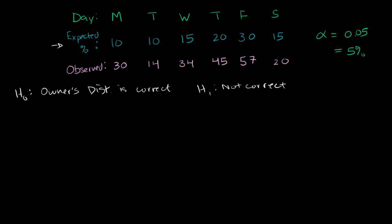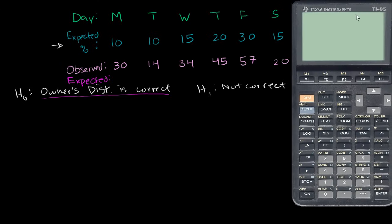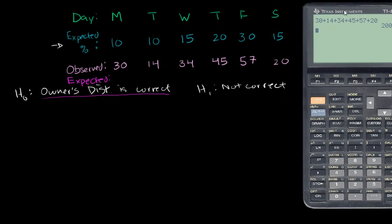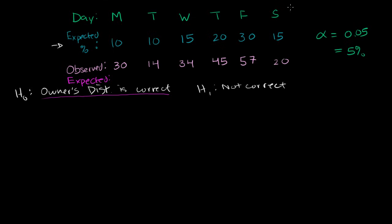To calculate the chi-square statistic, I start by assuming the owner's distribution is correct and computing the expected observed counts. We need the total number of customers, so let's add up the observed data: 30 + 14 + 34 + 45 + 57 + 20 = 200 customers total for the week. So I'll add an 'expected' row to the table.